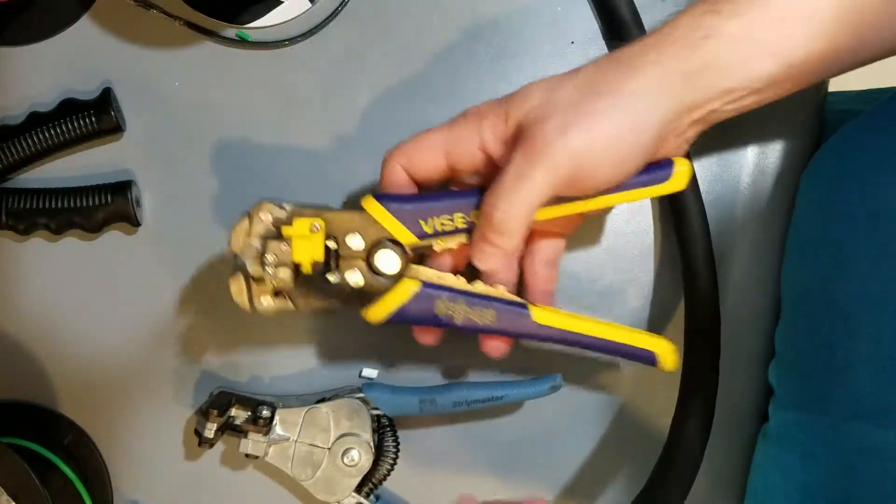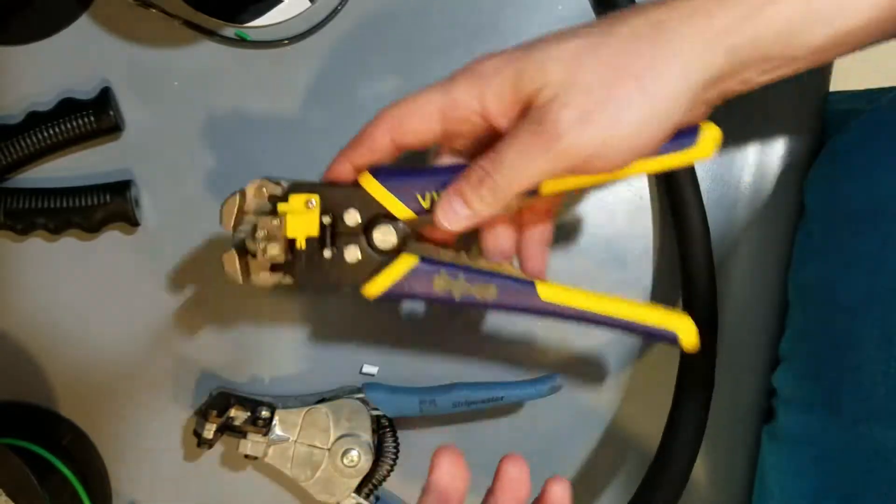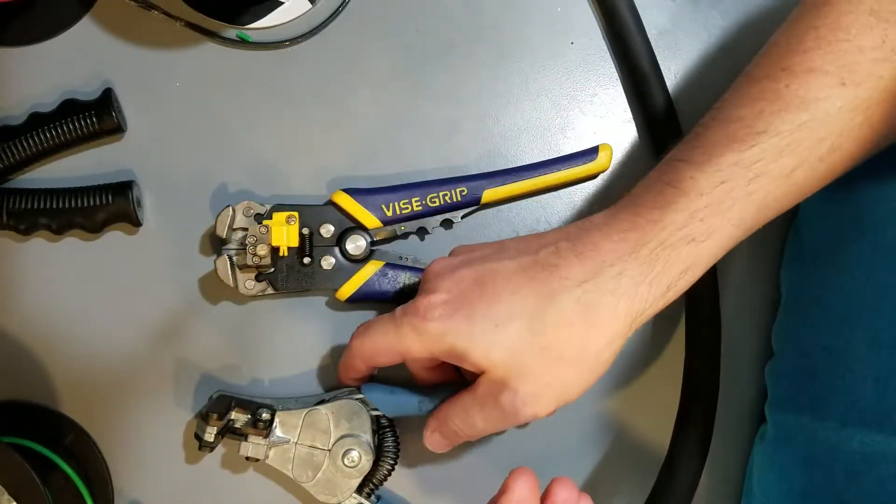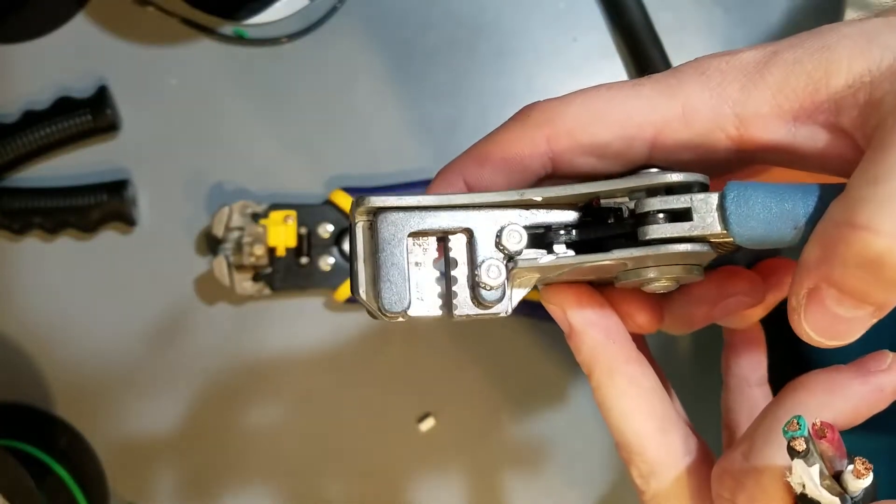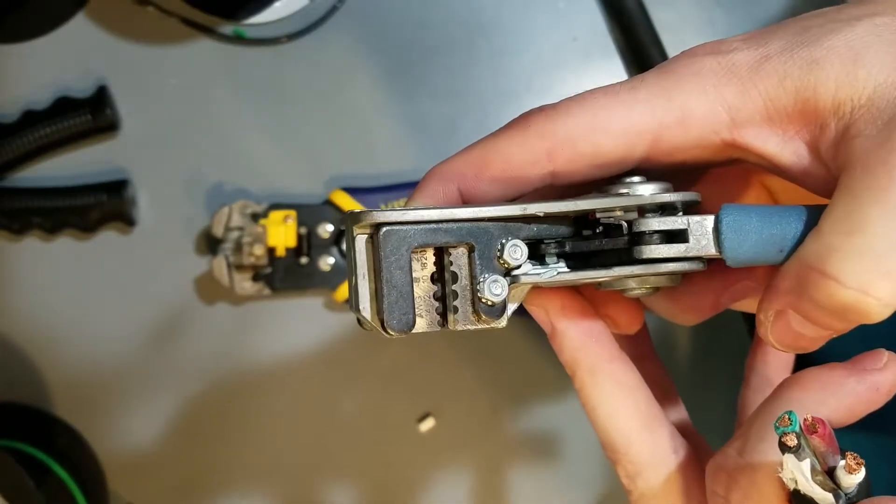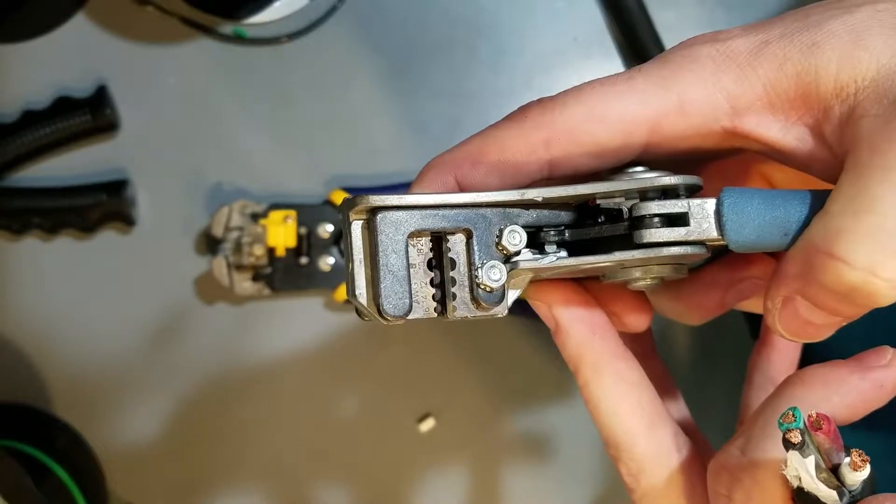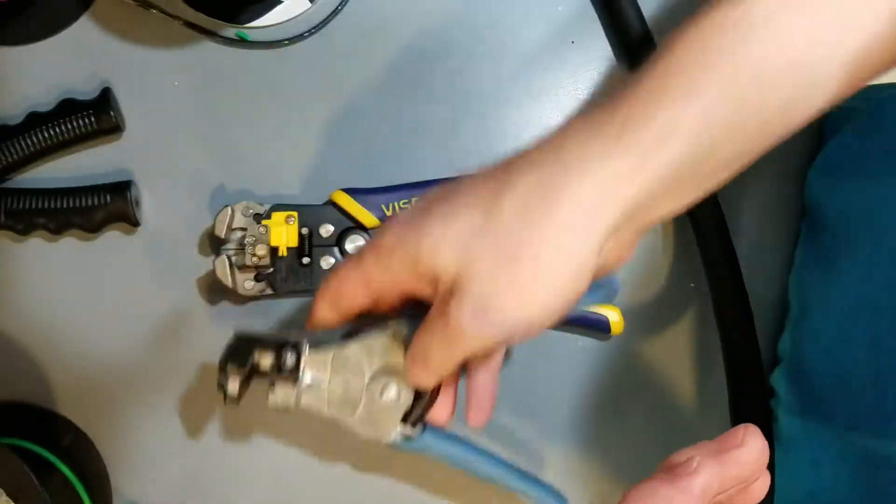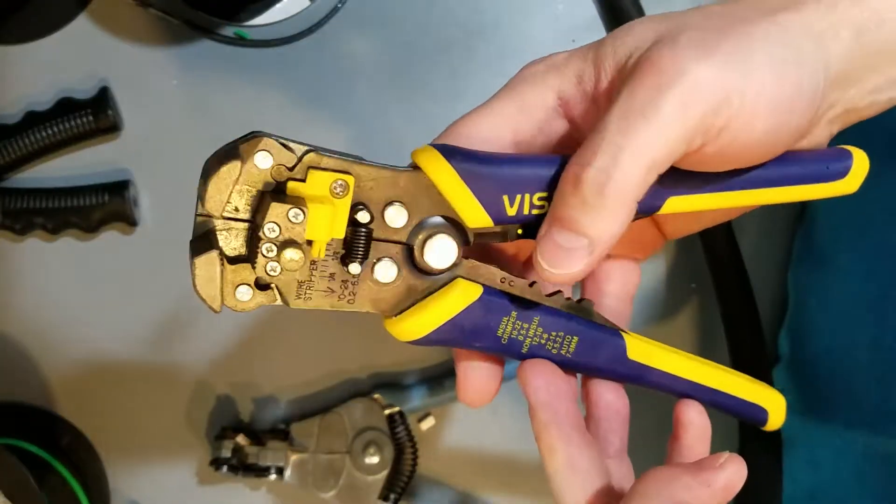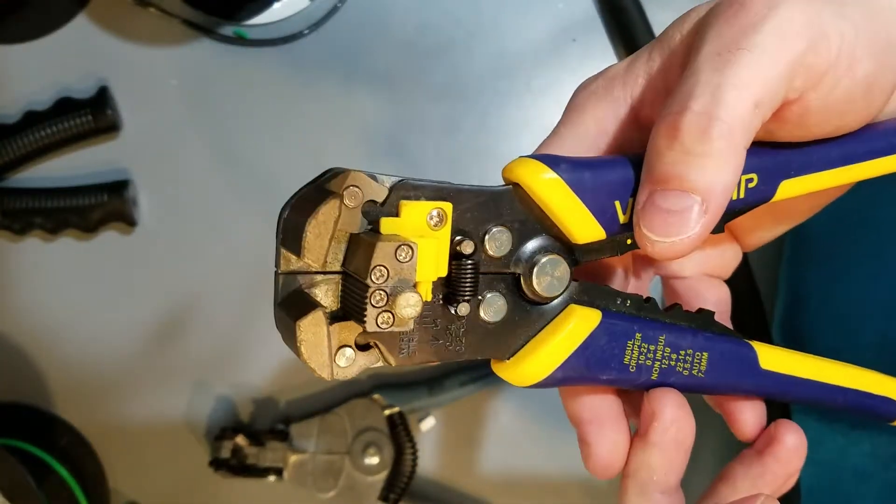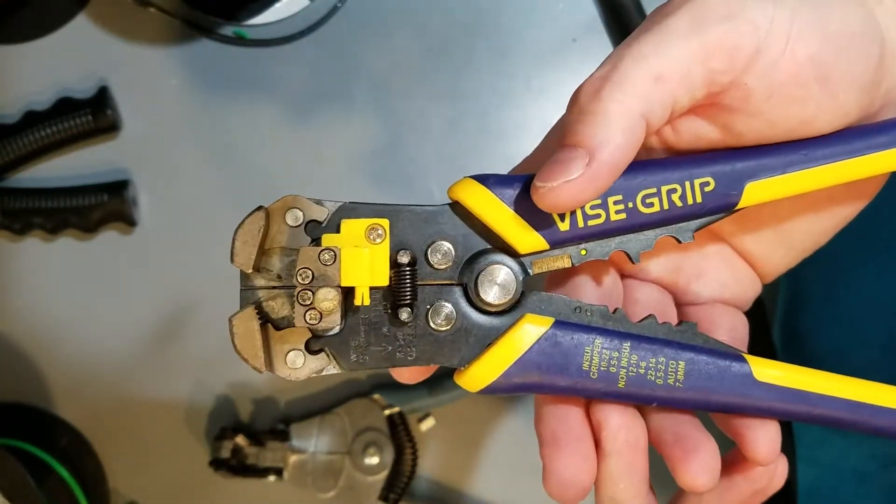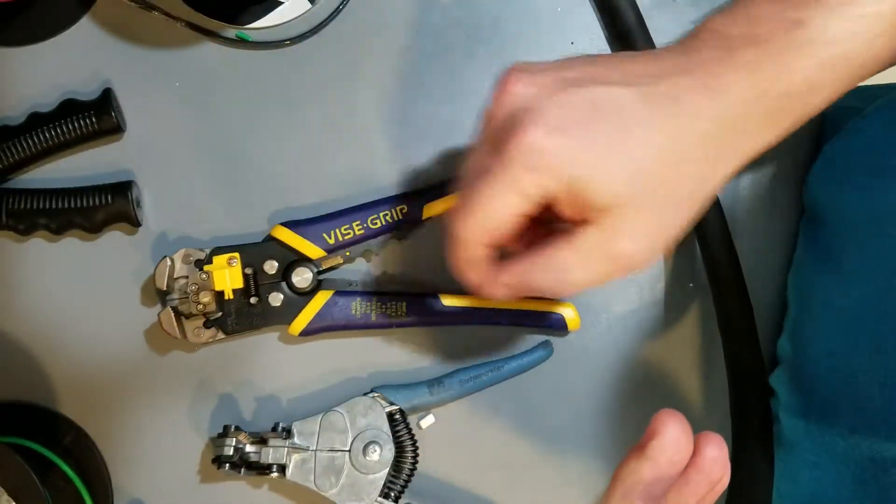This guy actually will strip up to—I think I've done six gauge wire before with it. This one has limitations. You can only go from 10 gauge to 20 gauge. So this one is cheaper, a little bit harder to work with, but it accommodates a wider range of gauge wire.